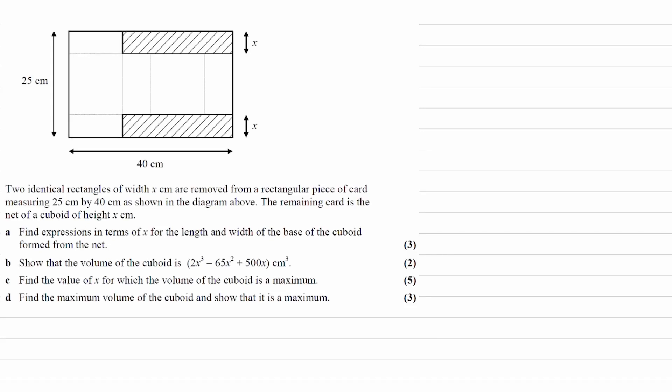This is a differentiation modeling question. We have two identical rectangles of width x removed from a bigger rectangle of width 25 cm and length 40 cm, and what's left behind is the net of a cuboid, where this is the base of the shape.